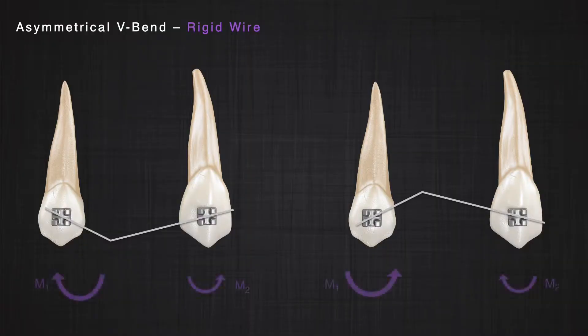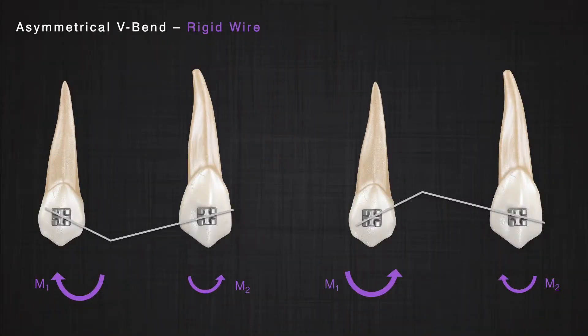We also discussed that if we have an asymmetrical V-bend — meaning the V-bend is placed closer to one of the brackets — that bracket receives the larger moment, while the bracket farther from the V-bend receives the smaller moment. Since one moment is larger and one is smaller, there must be forces in your system producing a couple, and that couple produces a moment in the same direction as the smaller moment, to establish equilibrium.